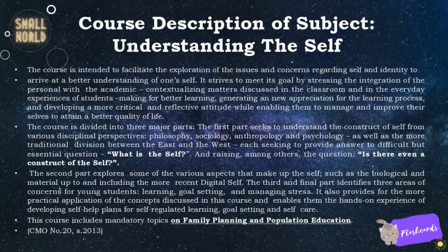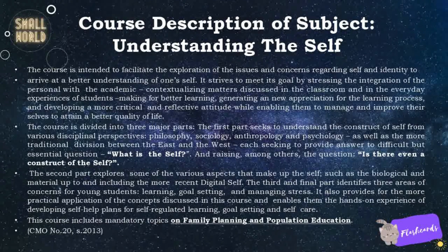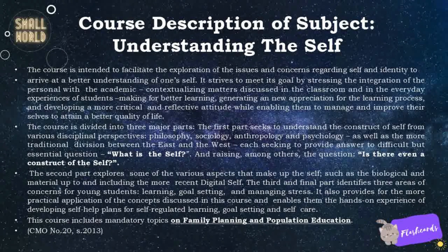The second part explores some of the various aspects that make up the self, such as the biological and material, up to and including the more recent digital self. The third and final part identifies three areas of concern for young students: learning, goal setting, and managing stress. It also provides for the more practical application of the concepts discussed in this course and enables hands-on experience of developing self-help plans for self-regulated learning, goal setting, and self-care. This course includes mandatory topics on family planning and population education, CMO Number 20, S.2013.